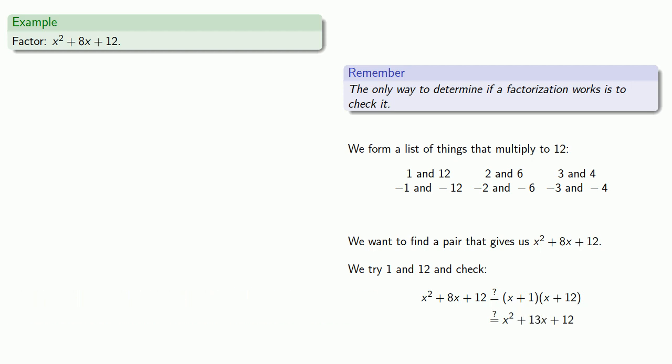Since the first thing we try always works, this is our factorization. Oh wait, these aren't equal. And that means 1 and 12 don't work, and so they do not give us a factorization.